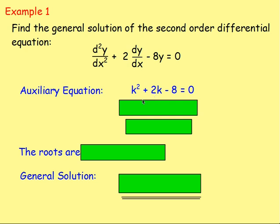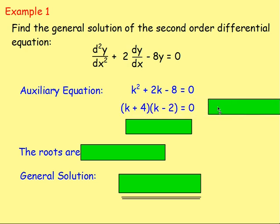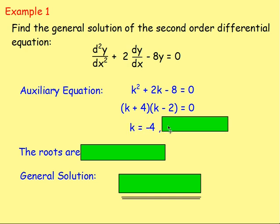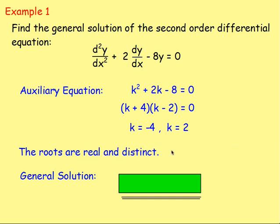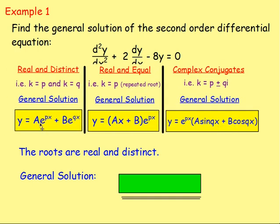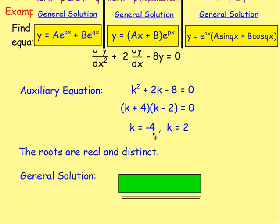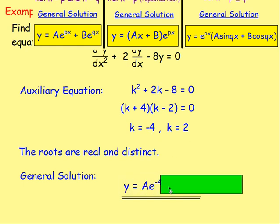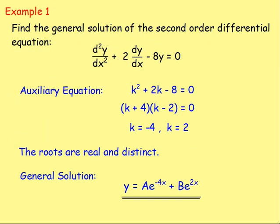The next step is to solve for k by factorising. That gives us (k + 4)(k − 2), so k equals negative 4 and k equals 2. The roots are therefore real and distinct. So the general solution of this second order differential equation will be — because the roots are real and distinct — ae to the power of px plus be to the power of qx. We know these values of k are negative 4 and 2, so y equals ae to the negative 4x plus be to the power of 2x. And that is the general solution.